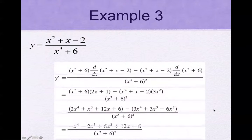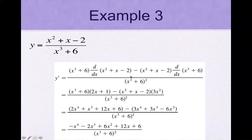Here's our example. We do the bottom times the derivative of the top, minus the top times the derivative of the bottom, divided by the bottom squared. We foil and subtract, and after simplifying we arrive at the final answer. That is how you find the derivative of a quotient.